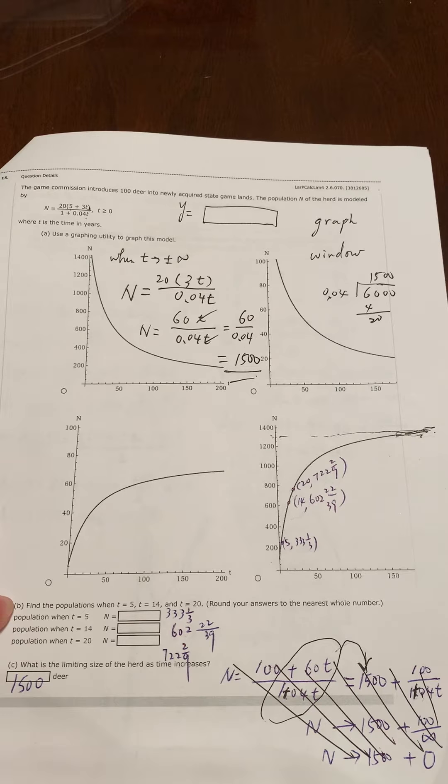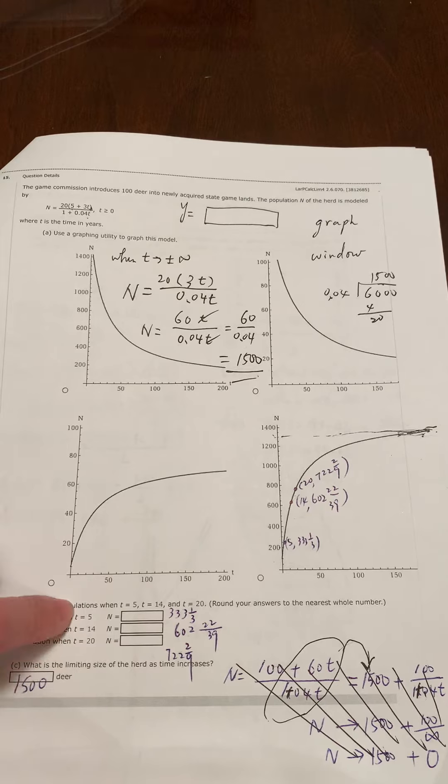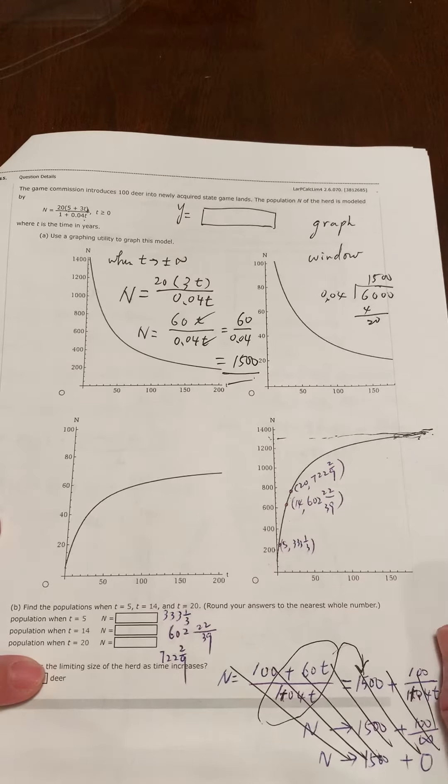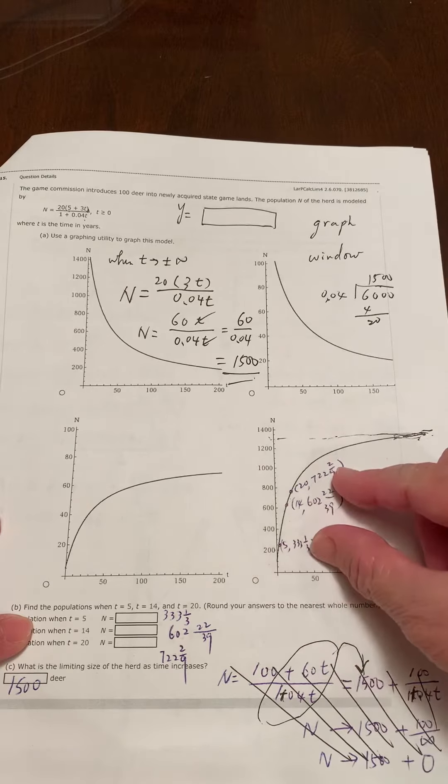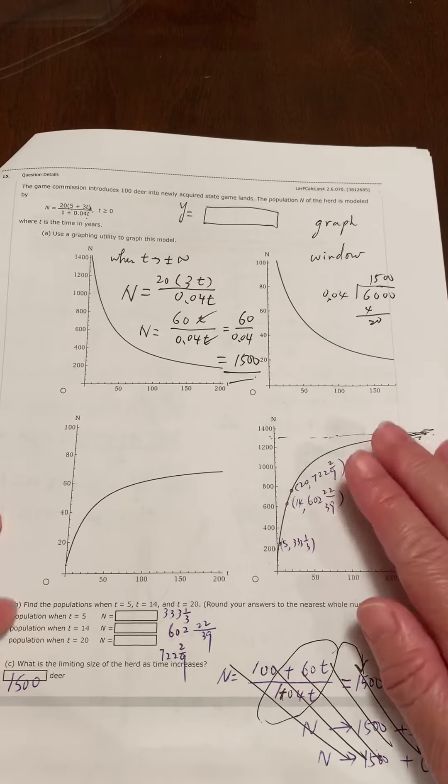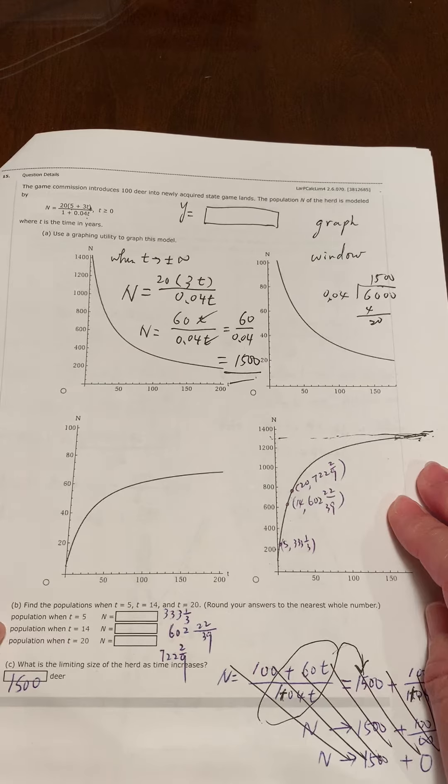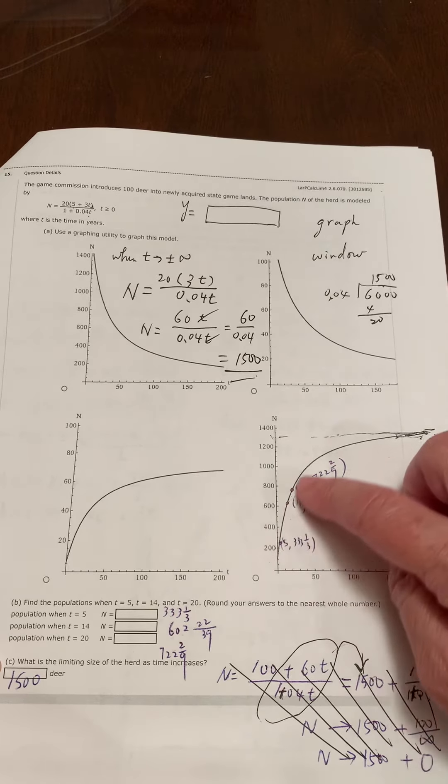You can test a few points. For part B, input three different t values and then use your calculator to find the output y. Now these three points, you want to put here or put there. Which one makes more sense? Definitely this one. So part A is easily done with the help of part B.